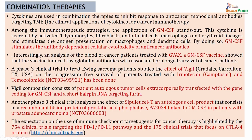There are other phase 3 clinical trials. One phase 3 clinical trial analyzes the effect of Sipuleucel-T, which is basically an autologous cell product that consists of a recombinant fusion protein of prostatic acid phosphatase linked to GM-CSF, in patients with prostate adenocarcinoma. There are more than 754 clinical trials happening pertaining to the PD-1 and PD-L1 pathway, and there are 175 clinical trials focusing on the CTLA-4 protein. The details of these can be obtained from a particular website.